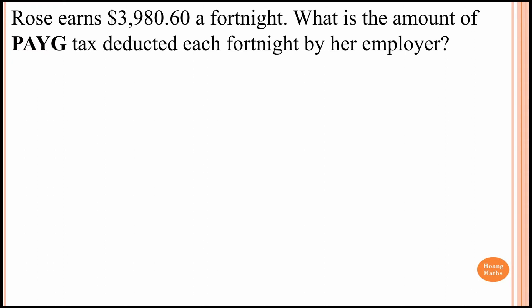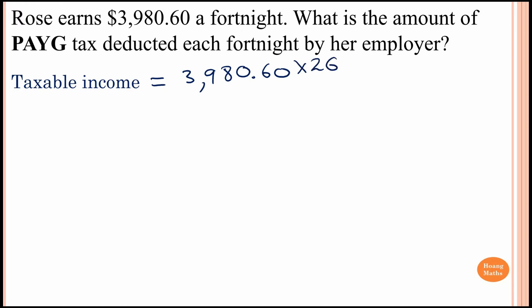For example, Rose earned $3,980.60 a fortnight. We need to find the amount of PAYG tax deducted each fortnight by her employer. First, we work out the taxable income: $3,980.60 times 26 fortnights in a year, which equals $103,495.60.